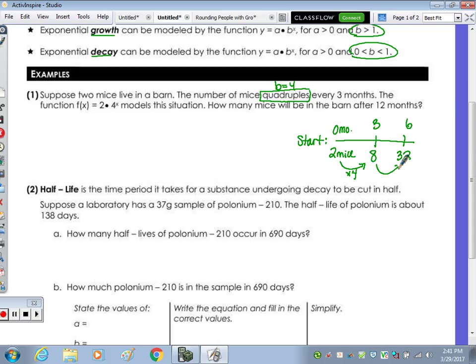When's the next change? Because it's going to quadruple every three months, so six. And then we're going to have 32 mice, because eight times four. Take a minute to calculate at nine months and then at 12 months. How many mice at nine? 128. And then at 12 months? 512. So how many mice will be in the barn? 512 mice.